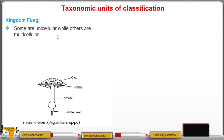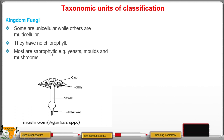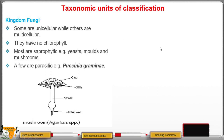In kingdom Fungi, the organisms can be unicellular or multicellular. They contain no chlorophyll, and most of them are saprophytic — they depend on dead, decaying organisms to obtain nutrients. Examples are yeast, molds, and mushrooms. Some fungi are parasitic, but most are saprophytic.